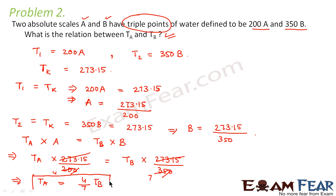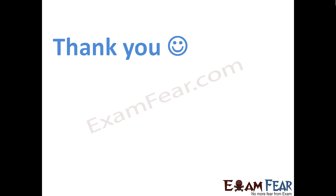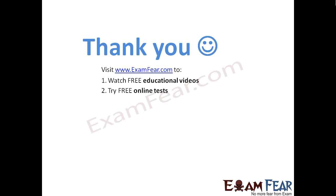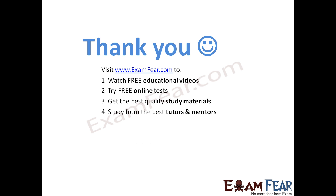So TA = (4/7) TB is the relation between TA and TB. Thank you. Please visit examfear.com to watch free educational videos, try free online tests, get the best quality study materials, study from the best tutors and mentors, and much more. Thank you once again.